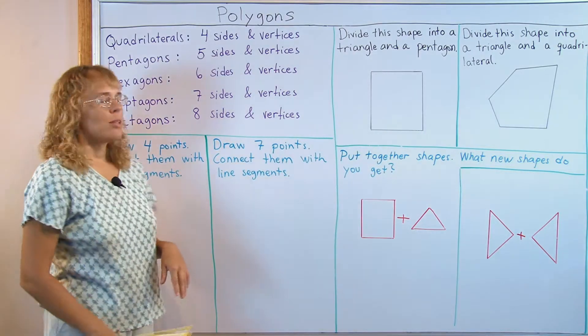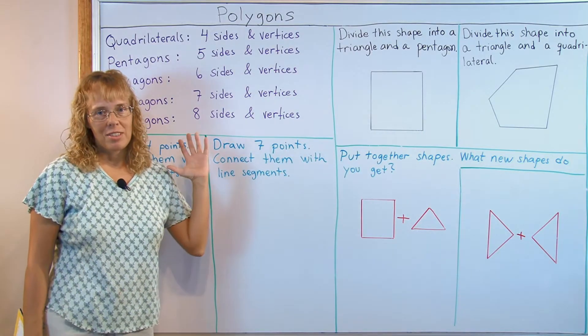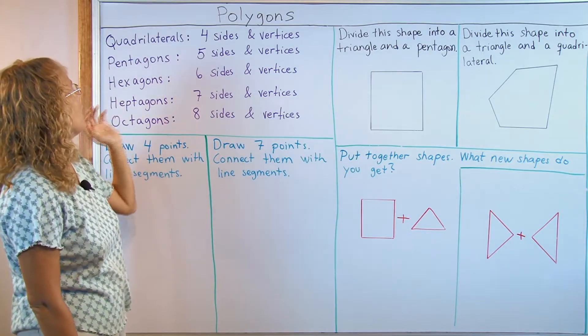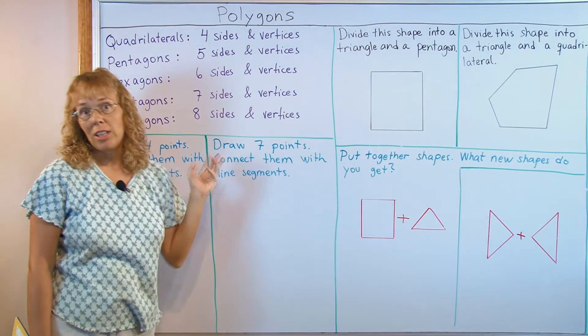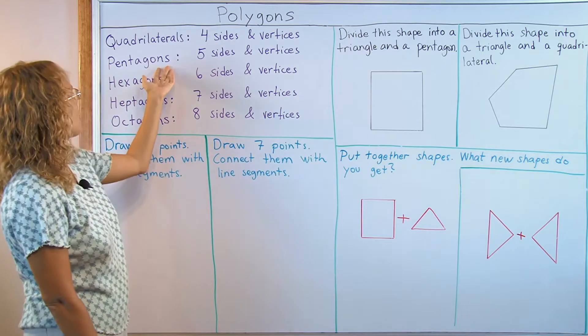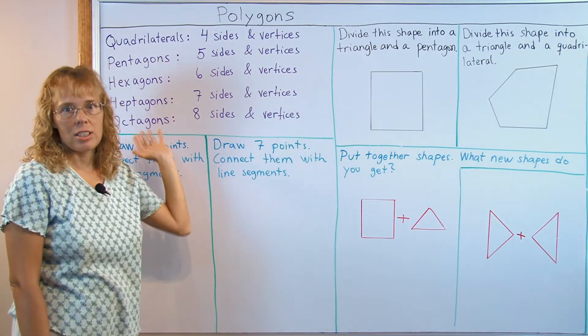Children at that point are basically studying the names of these different polygons, these different words and terms. Quadrilaterals have four sides and four vertices and then there's pentagons, hexagons, heptagons and octagons.